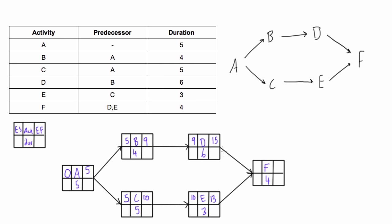So we bring the 15 into the early start of F—the largest early finish becomes the early start of the succeeding activity. Then we have 15 plus 4, and the earliest finish of F is 19.